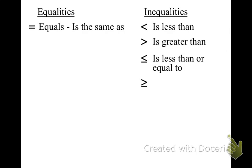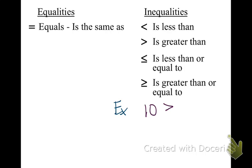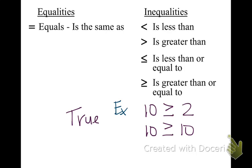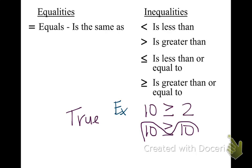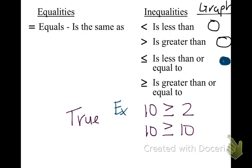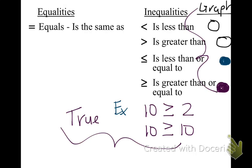Our other new symbol is greater than or equal to. For example, 10 is greater than or equal to 2, and 10 is greater than or equal to 10 — both true statements. Why? Because 10 is greater than 2, and 10 is equal to 10. When we're graphing, once again we're going to have a nice big solid circle. I want both examples as well as everything on this graph in your notes.